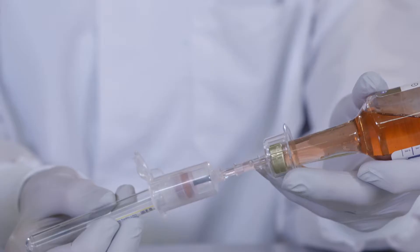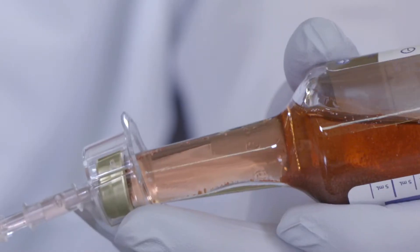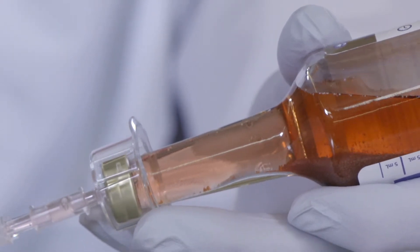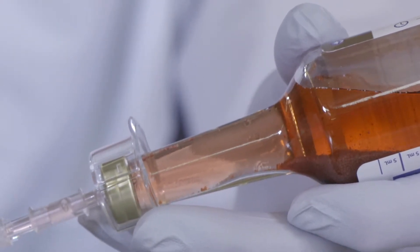If the bottle contains resin beads, angle the bottle so that resin beads gather along the side of the bottle. This helps to prevent resin beads from obstructing the transfer capset piercing tip.